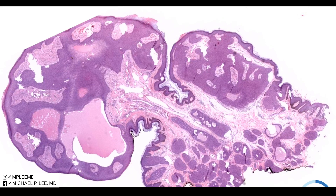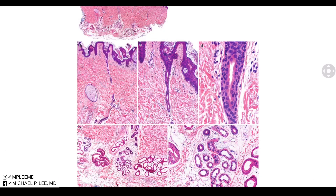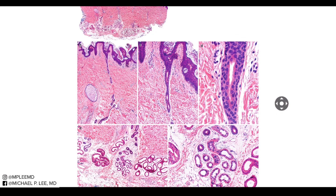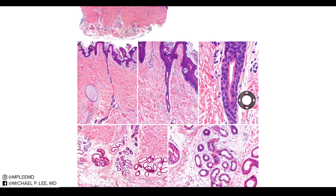Looking at what sweat ducts look like histologically — here is the epidermal surface, and you have this little duct taking sweat to the skin surface. At higher power, you can see that these cells are monomorphic and bland appearing — cuboidal cells lining a cuticle-lined duct.